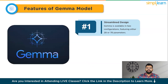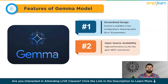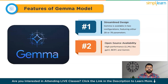Starting with number one, that is Streamlined Design. Gemma is available in two configurations, featuring either 2B or 7B parameters, significantly reducing its footprint compared to large models. This translates into quicker inference speeds and less computational demand, making it particularly suitable for personal computers and even mobile devices. The next is Open Source Availability. Unlike many high-performance large language models like GPT-4, BERT, and Gemini, Gemma's code and parameters are accessible to everyone, allowing developers and researchers to experiment, customize, and contribute to its advancement freely.